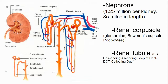The nephrons are made up of a renal corpuscle — which is the glomerulus, a little band of capillaries — and the Bowman's capsule, which is the beginning of the renal tubule. The renal tubule contains the proximal convoluted tubule, the descending and ascending loops of Henle, the distal convoluted tubule, and the collecting duct. All of these collecting ducts dump into the renal pelvis, which ultimately heads to your bladder.